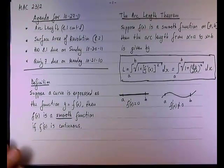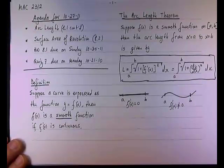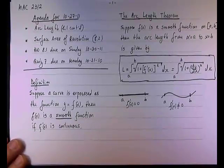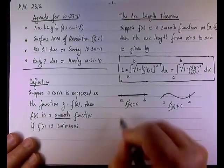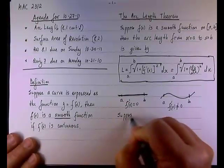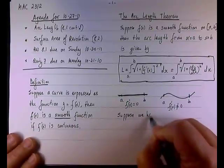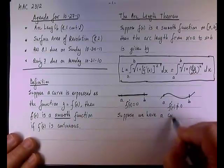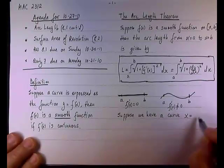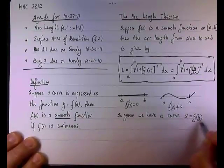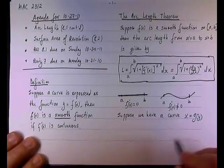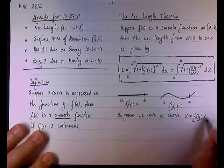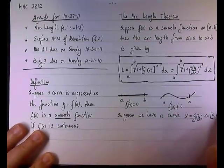Another comment: this is the case where y equals f(x). But what happens if instead of y equals f(x), we have another curve, such as x equals g(y)? Suppose we have a curve x equals g(y), and y on an interval goes from c to d.